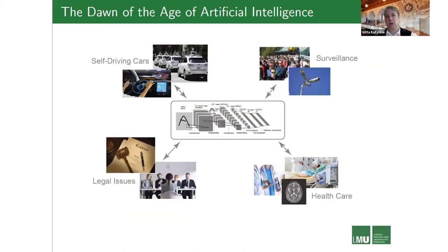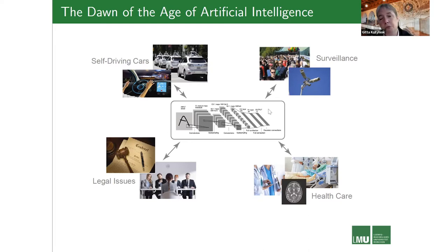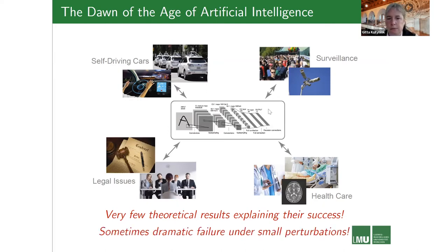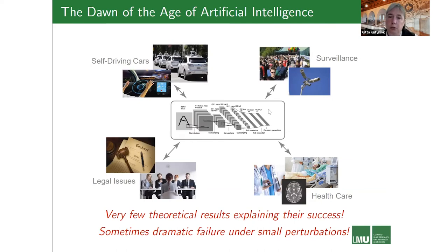We all know how successful deep learning is these days in various applications: automatic driving, surveillance tasks, legal issues, and the healthcare sector, which has become even more important recently. But at this point, very few theoretical results explain their success, which is a tremendous problem, because we also have robustness issues — for instance, with small perturbations there can be drastic failures, like autonomous cars making completely wrong decisions when signs change slightly.